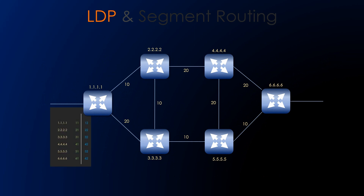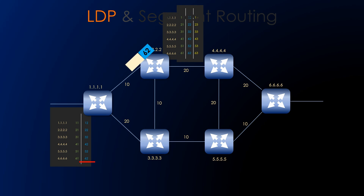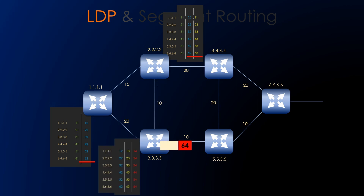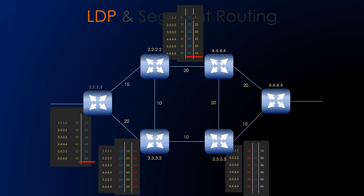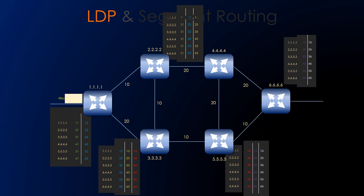Whenever a packet traversal happens, a native IP packet comes to the ingress router. The ingress router checks what the egress is and, based on that, pushes a label value to the packet. When it reaches the next hop, the next hop checks the LDP database table and, based on that, swaps the label and pushes to the next hop based on the IGP shortest path. Similarly, the packet traverses from ingress to egress, so LDP follows the IGP shortest path.